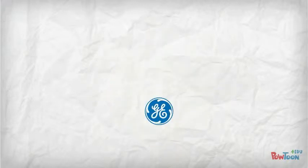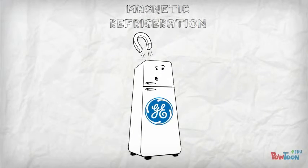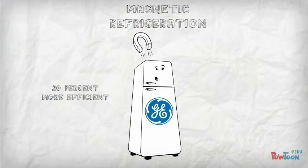GE's next-generation refrigerators include magnetic refrigeration where no refrigerants are used, making them 20% more efficient. The system uses a water-based fluid rather than a chemical refrigerant, such as Freon, to transfer heat from inside the refrigerator and achieve the cooling process.